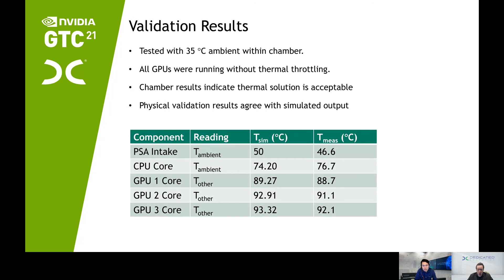GPU one was simulated at 89 and came in measured at about 88. GPU two is in alignment where it's at 92.91 simulated and the measured is a little less. GPU three as well — 93.32 simulated and the measured is 92.1. It's important that when building simulated models we're not always going to get everything right, so we have to go back to the block models in IcePak to modify them so that they come into alignment with the real world. But the benefit is that you can reuse these block models over and over and speed your development effort.